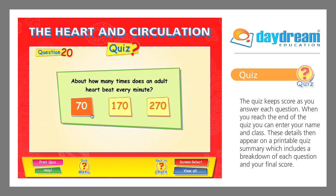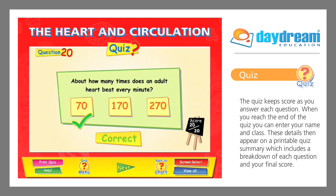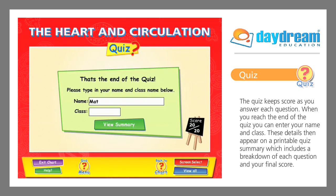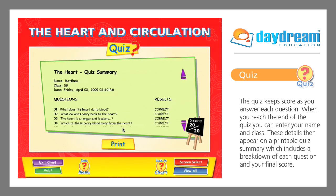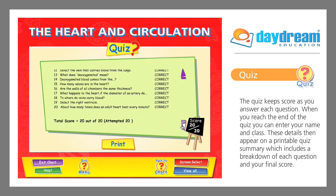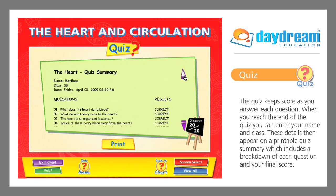The quiz keeps score as you answer each question. When you reach the end of the quiz, you can enter your name and class. These details then appear on a printable quiz summary, which includes a breakdown of each question and your final score.